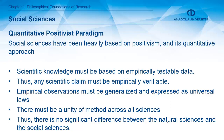When we look at social sciences based on these philosophical perspectives, the first important paradigm is the quantitative positivist paradigm. Social sciences have been heavily based on positivism and its quantitative approach. According to positivism, scientific knowledge must be based on empirically testable data. All scientific processes should be empirically verifiable, empirical observations must be expressed as universal laws, and there must be a unity of method across all sciences — natural and social.